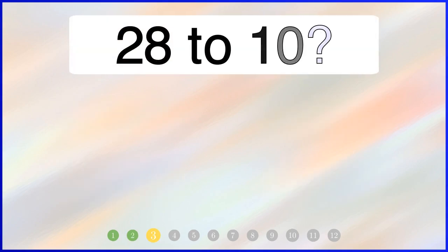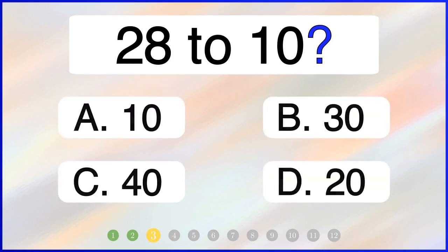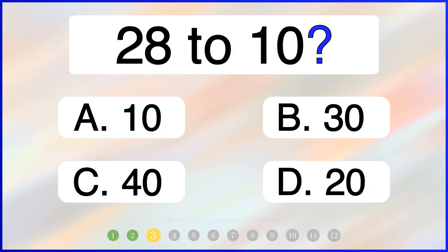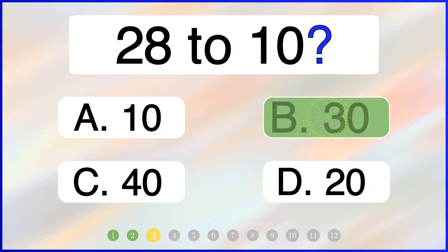What is 28 rounded to the nearest 10? The correct answer is option B: 30.